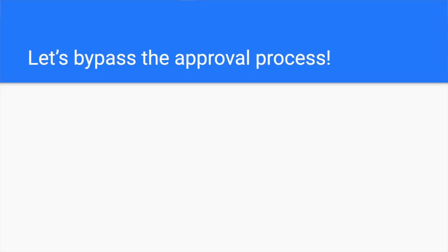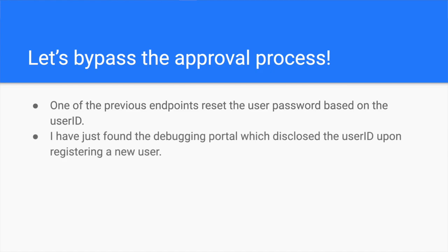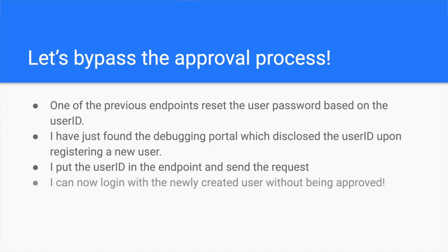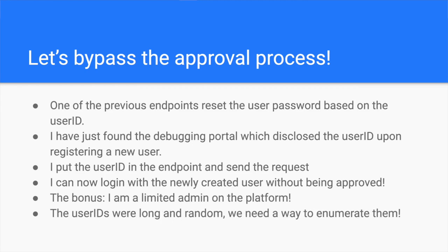Bypassing the approval process. I mentioned earlier that I found a password reset API endpoint that uses the account ID. And I now have the new user ID. So I quickly sent the request. To my surprise, the response was positive and I could log in as the new user without approval from an internal employee. As a bonus, I had a limited admin role, which is not as powerful as the system administrator, but it's a good start to hunt for the ultimate account takeover. Sadly, the user identifiers were long and random — also known as UUIDs — so I needed a way to enumerate them.